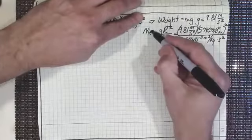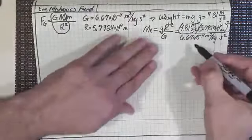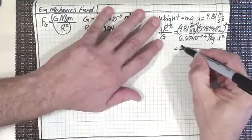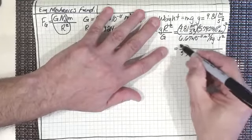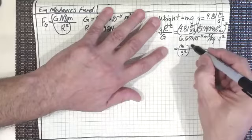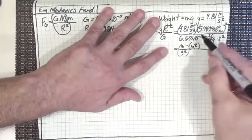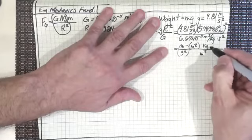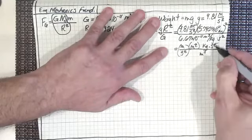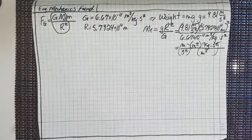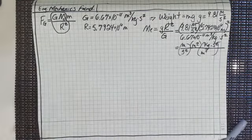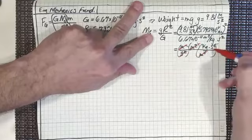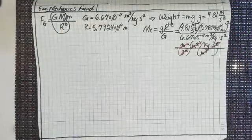Does that all come out to kilograms? In a major fraction we have meters per second squared times meters squared on top, and meters cubed per kilogram second squared on the bottom. The seconds squared cancel, the meters cancel, and there you go — it gives us kilograms.